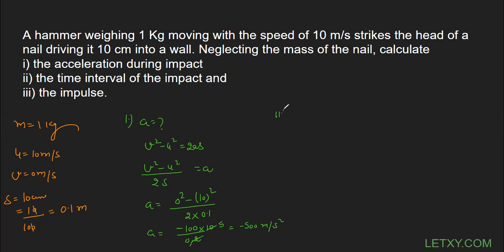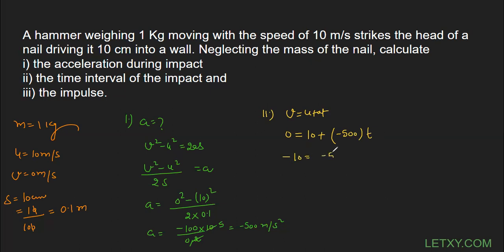In the second part, we need to find the time interval of the impact. Acceleration is now known, initial velocity and final velocity are given. We use the first equation of motion: v = u + at. Here v = 0, u = 10, and a = −500, so: 0 = 10 + (−500)t, which gives −10 = −500t.